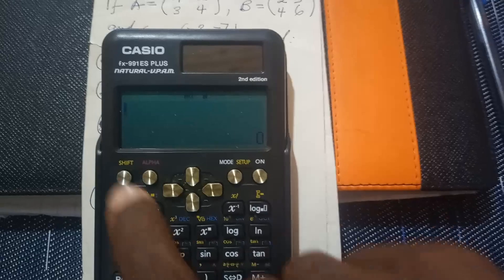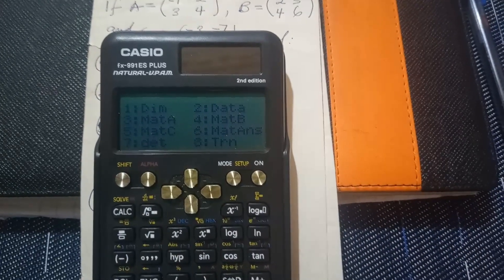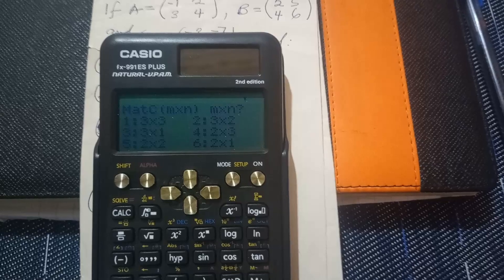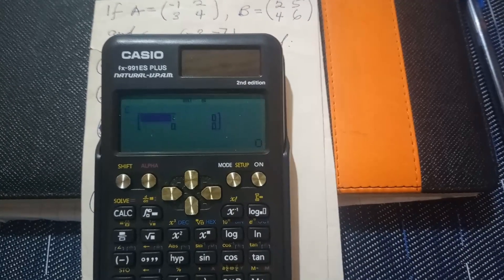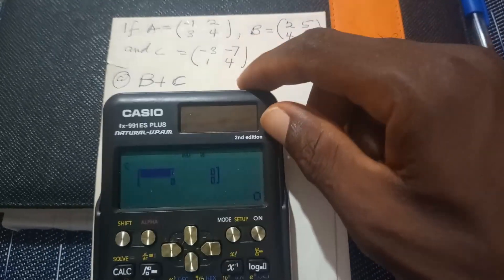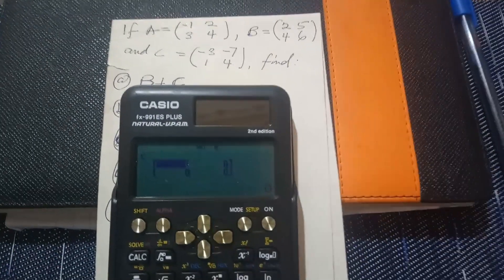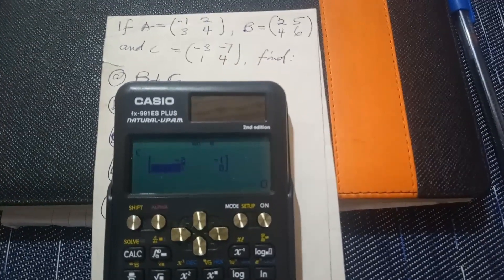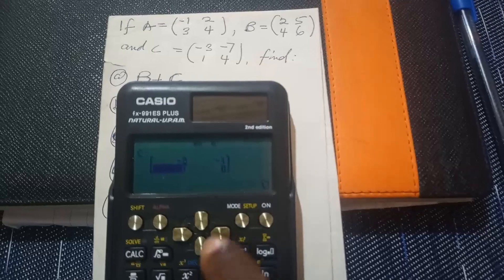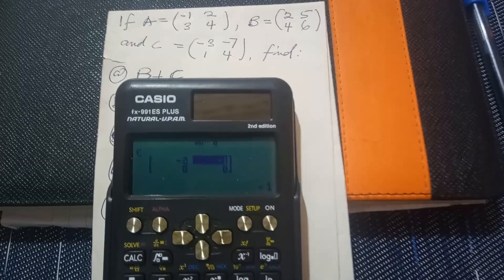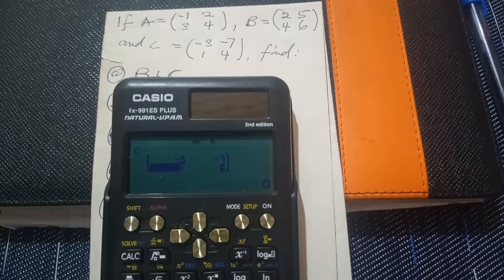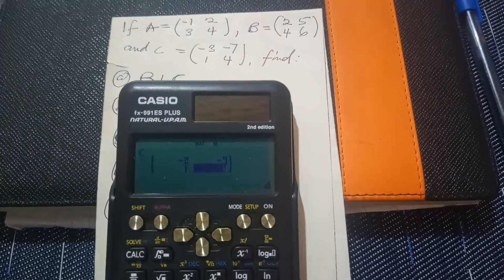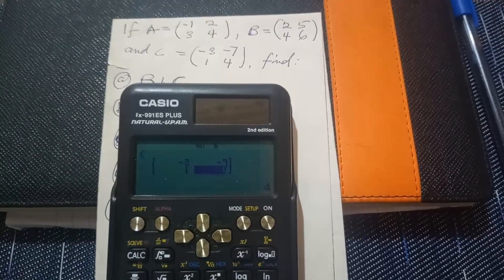Press AC, then Shift 4 for matrix, then data (number 2). Matrix C is number 3 — it's also a 2 by 2 matrix, so press 5. Enter the entries for matrix C: negative 3, then — correction — negative 7 (not negative 1), then 1, and 4. Press equals after each entry. All three matrices A, B, and C are now recorded.